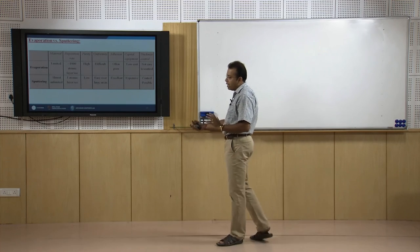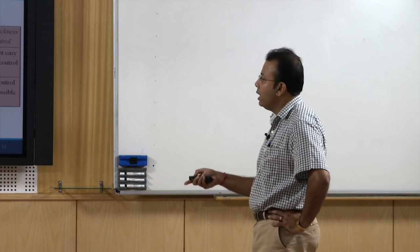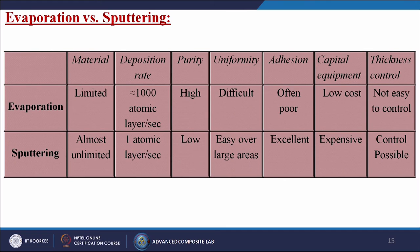Comparing evaporation and sputtering: for evaporation the material choice is limited, while sputtering is almost unlimited. Deposition rate is around 1000 atomic layers per second for evaporation versus one atomic layer per second for sputtering. Purity is very high for evaporation but low for sputtering. Uniformity is difficult to maintain for evaporation but easy over large areas for sputtering. Adhesion is often poor for evaporation but excellent for sputtering. Capital equipment cost is low for evaporation but expensive for sputtering. Thickness control is not easily controllable for evaporation but well controllable for sputtering.